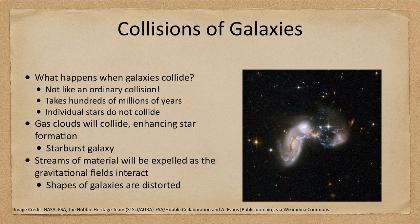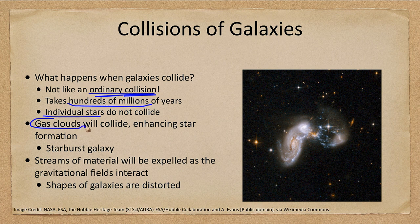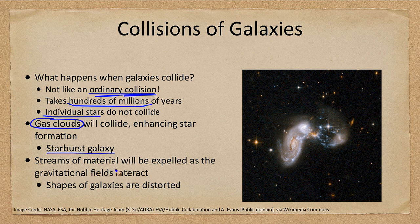What happens when galaxies collide? It is not like an ordinary collision — it takes hundreds of millions of years. The individual stars do not collide. However, gas clouds will collide, which enhances star formation, giving us sometimes what we call a starburst galaxy with extra material forming around — here we see that extra material in blue. Streams of material can also be expelled as those gravitational fields interact, distorting the galaxies and giving us tidal streams such as we looked at with our Milky Way.